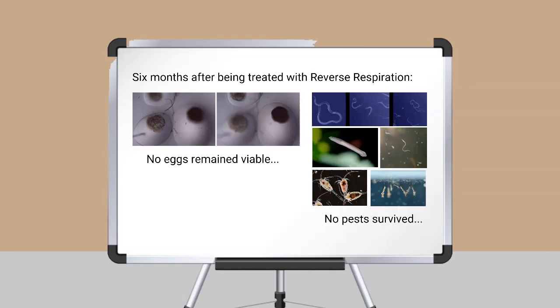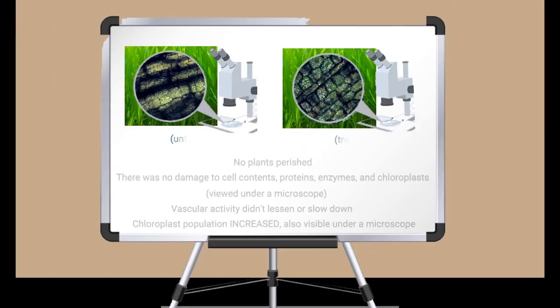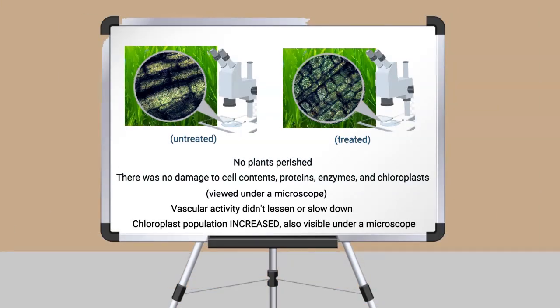Six months after being treated with reverse respiration, no eggs remained viable, no pests survived, no plants perished, and there was no damage to the cell contents.